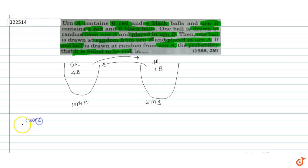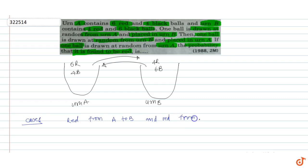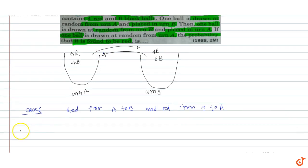Basically, there are 4 total cases that can exist. Let's write Case 1: we transfer a red ball from A to B, and then a red ball from B back to A. The probability of drawing a red ball from A finally — that is the quantity we need to find.